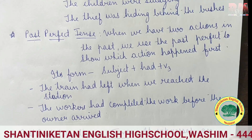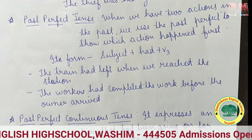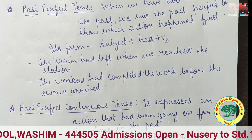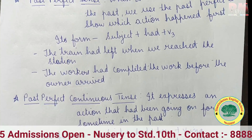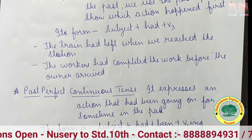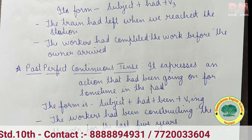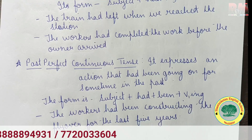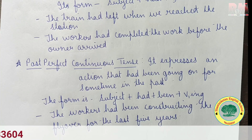Past perfect tense: when we have two actions in the past, we use the past perfect to show which action happened first. Its form is subject plus had plus V3. For example: 'The train had left when we reached the station.' Here, 'had left' shows it happened first before we reached. Another example: 'The workers had completed work before the owner arrived.'